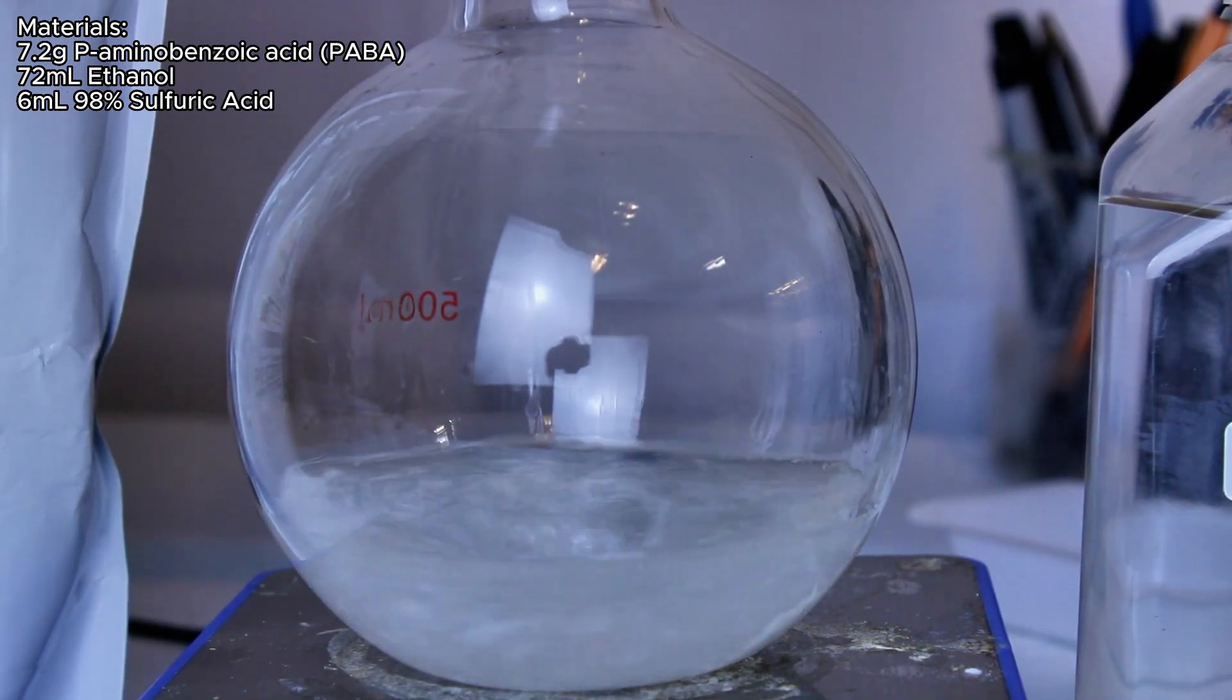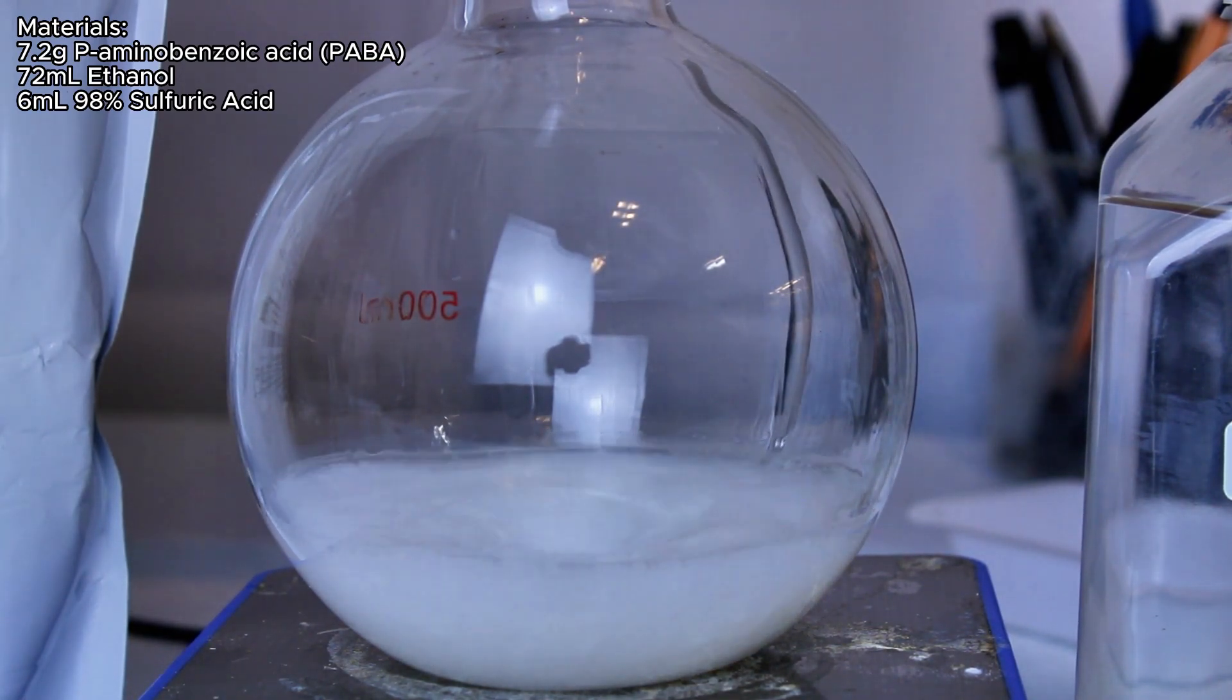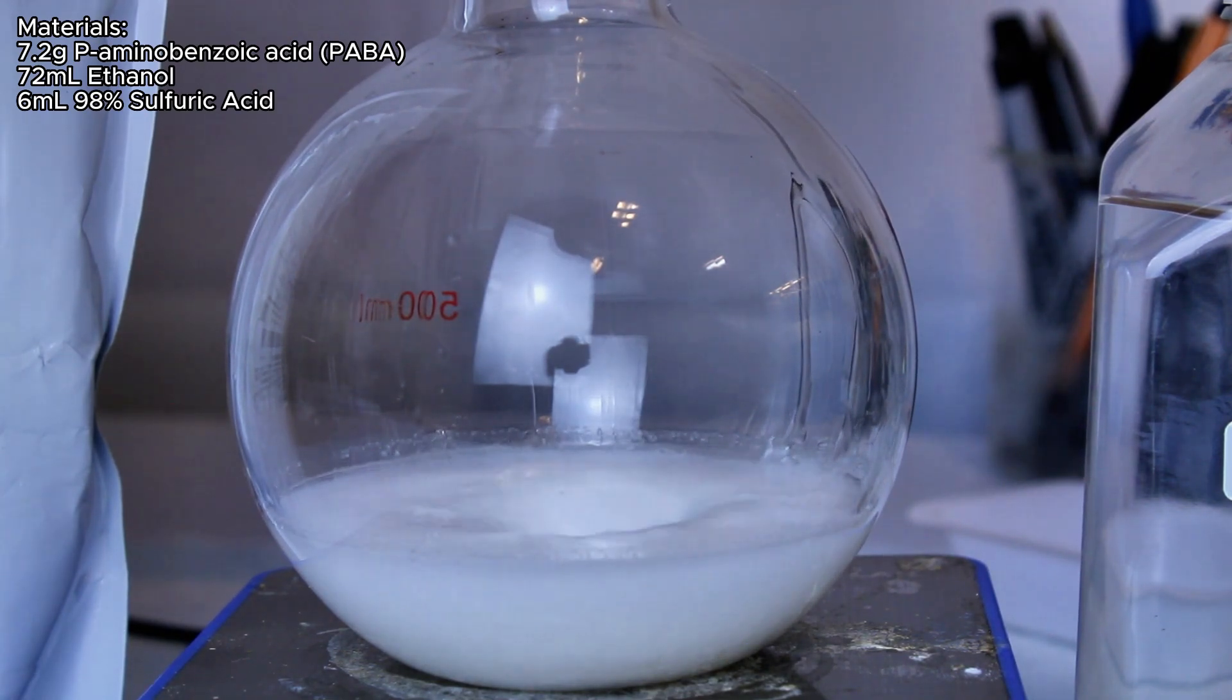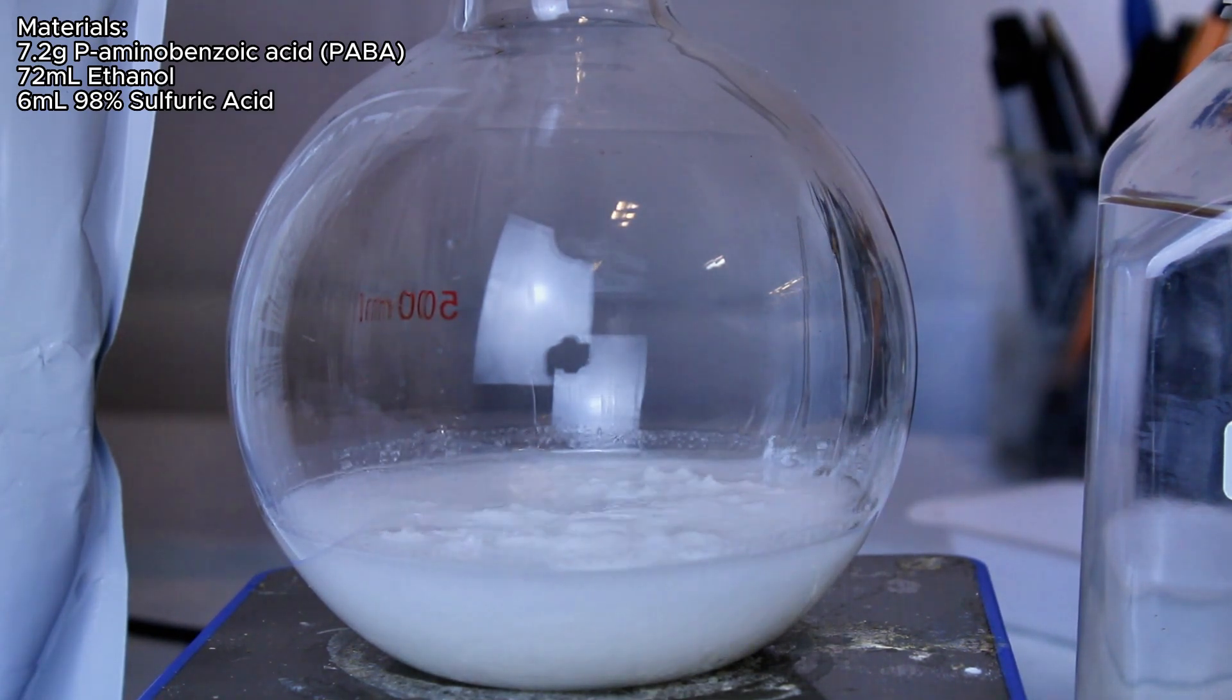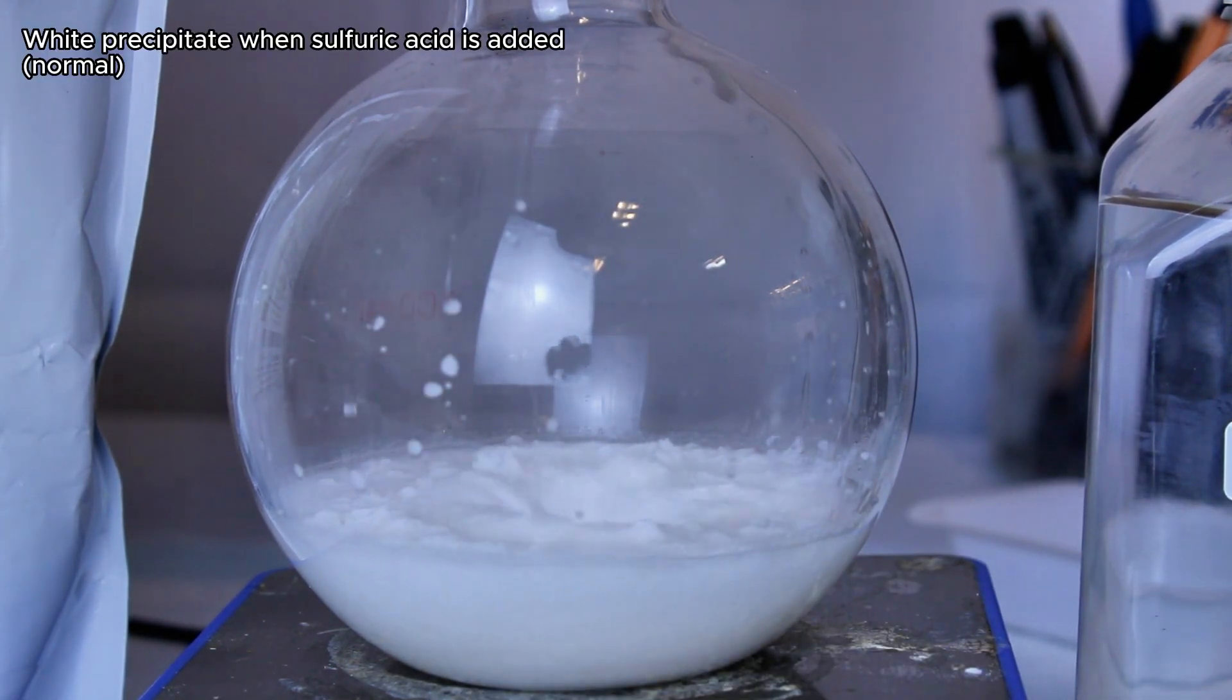To actually make benzocaine, what I want to do is add 7.2 grams of the PABA and 72 milliliters of the ethanol to a boiling flask. I then slowly and under constant stirring add my sulfuric acid. This is done because when sulfuric acid dissolves, it produces a lot of heat, and I don't want to boil away my ethanol.